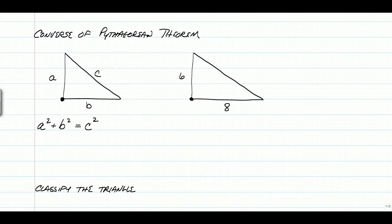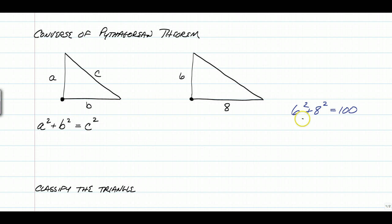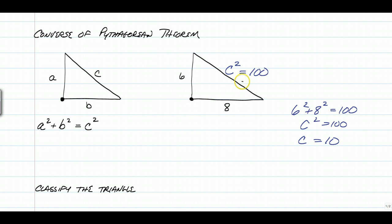Now we're going to move on to the converse of the Pythagorean theorem, which tells us what kind of triangle it is. We already know that a² + b² = c² makes a right triangle. Looking at this example, 6² + 8² equals 100, so c equals 10. That's the only right triangle you can make with legs of 6 and 8.